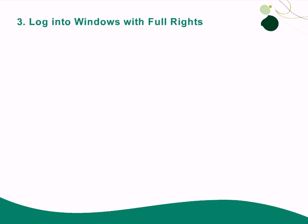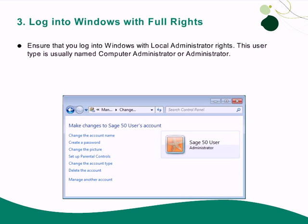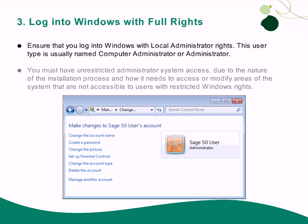After rebooting, the next step to take is to log into Windows with local administrator rights. This user type is often named computer administrator or simply administrator. The Windows user profile that you are logged into must have unrestricted system access when installing SAGE50 accounting. This is due to the nature of the installation process and how it needs to access and possibly modify areas of the system that are not accessible to users with restricted Windows rights.